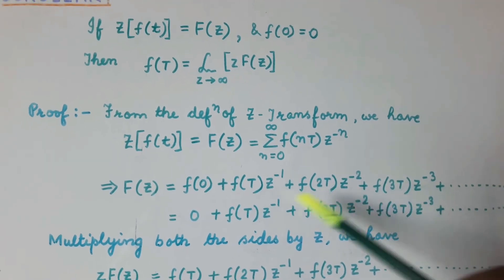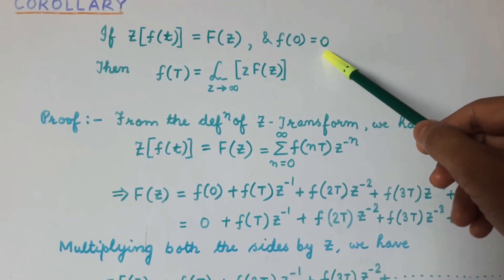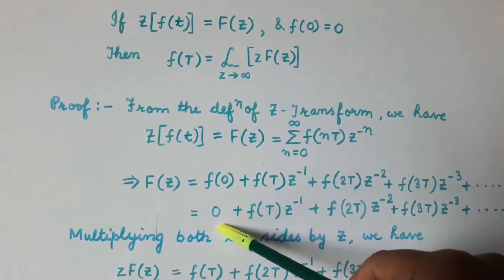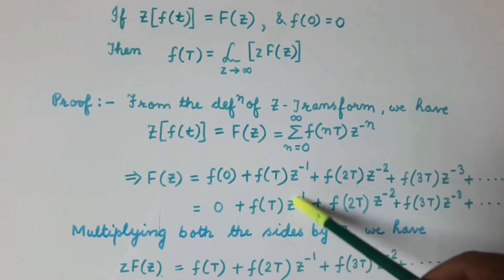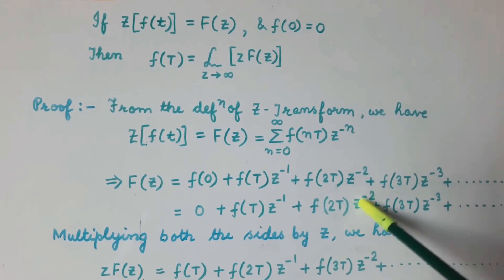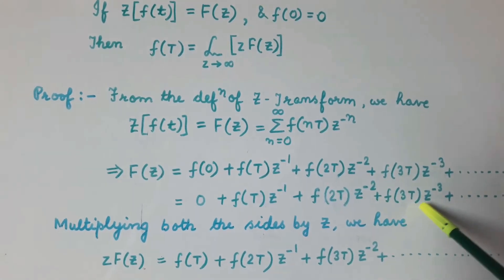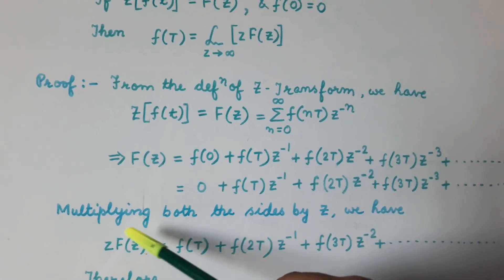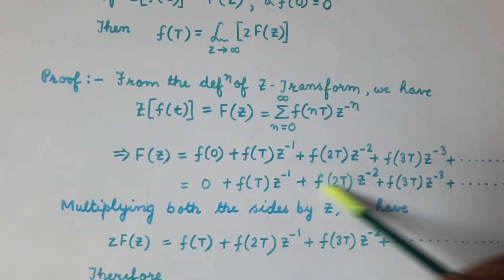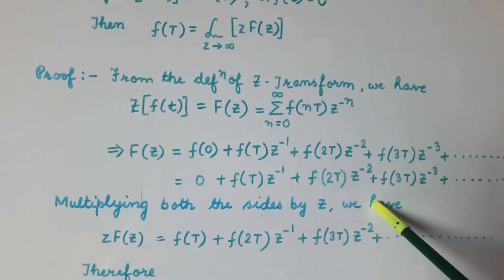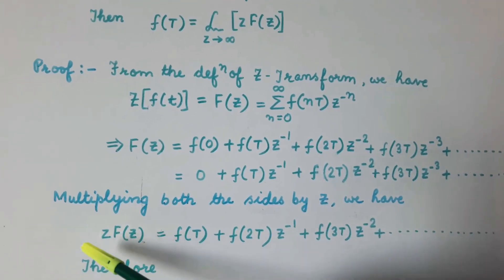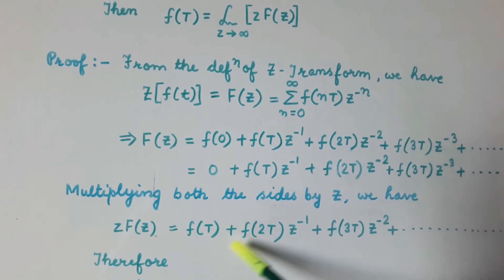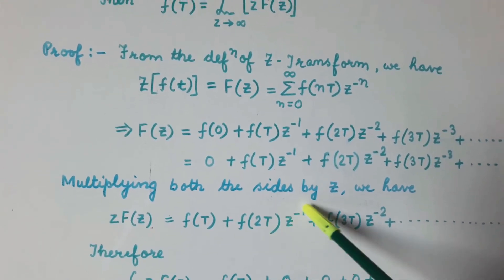Now it is given that f(0) is 0, so we substitute to get F(z) equal to 0 plus f(T) z to the power minus 1 plus f(2T) z to the power minus 2 plus f(3T) z to the power minus 3, and so on. Multiplying both sides by z, we get z·F(z) equal to f(T) plus f(2T) z to the power minus 1 plus f(3T) z to the power minus 2, and so on.